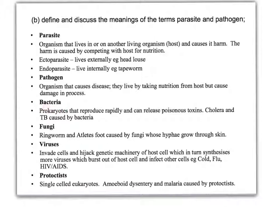Dealing with pathogens: bacteria are very much considered pathogens. They are prokaryotes that reproduce rapidly and tend to release poisonous toxins which give you symptoms of illness. Examples include cholera and tuberculosis. Fungi — ringworm and athlete's foot are caused by fungi, where the hyphae grow through skin and feed on material in the skin. Viruses actually invade cells and hijack the cellular machinery; we'll look at that in more detail when studying HIV.